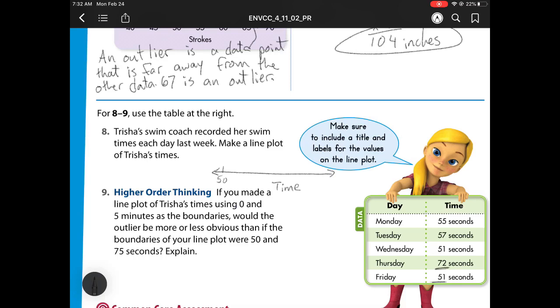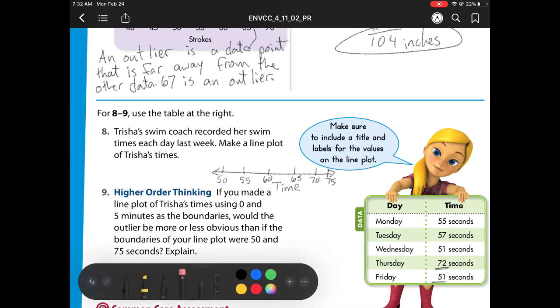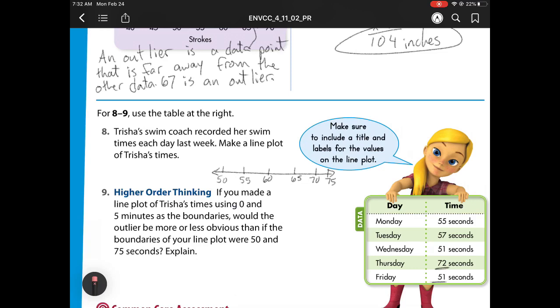So I'm going to do 50 and then count by 5. So 55, 60, 65, 70, 75. Notice this isn't really my time because that is not what goes at the bottom. What goes at the bottom is my units. So what I have here is this is seconds because I'm counting in seconds. And my top part is going to be my label, which is time. And time for what? Time for swimming. So I'm going to put swim time. And remember, I need to say, what does each dot equal? Each dot equals a day.